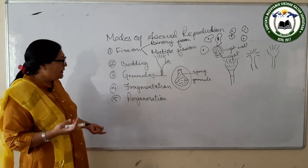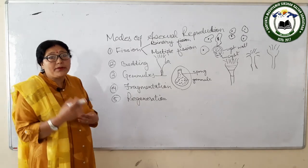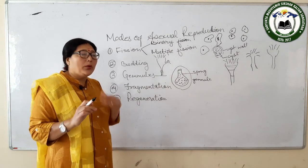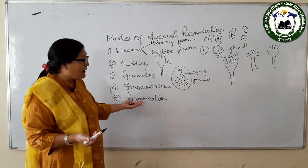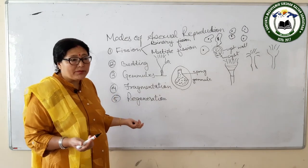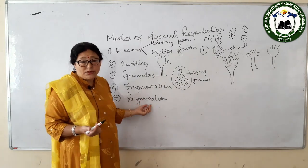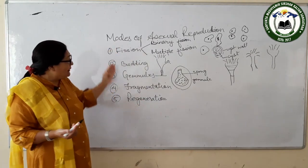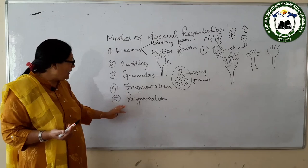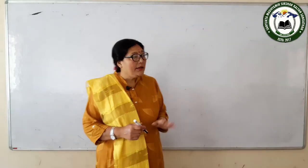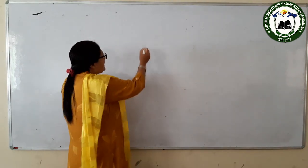The fifth mode is regeneration: the whole organism regenerates from a fragmented part. For example, in Hydra and Planaria, if a portion is cut off, the missing part regenerates and a new whole organism is formed. These are the five modes of asexual reproduction: fission, budding, gemmules, fragmentation, and regeneration.